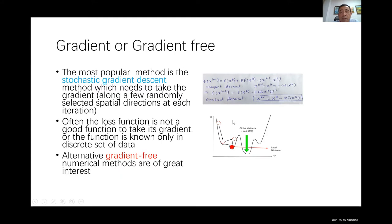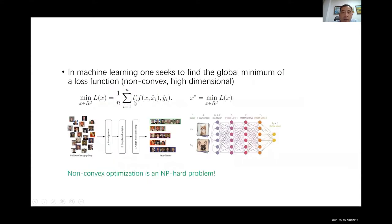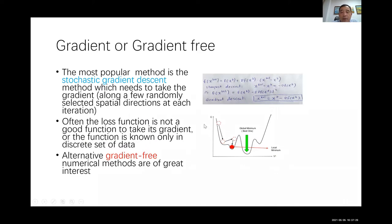Stochastic gradient descent (SGD) addresses this. Instead of taking the gradient over all directions, you randomly select a few directions and also randomly pick a mini-batch of loss functions — a random mini-batch. There are two advantages: you save computational cost, and because the batches are selected randomly you effectively add noise, which gives you some probability to jump out of a local minimum and better probability to converge to the global minimum.